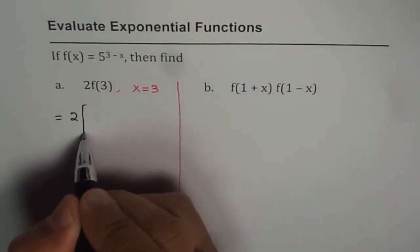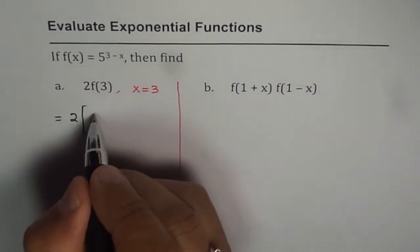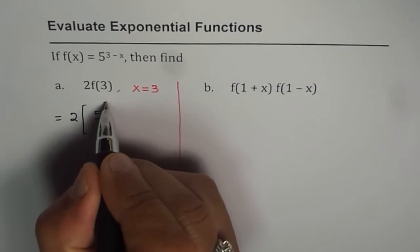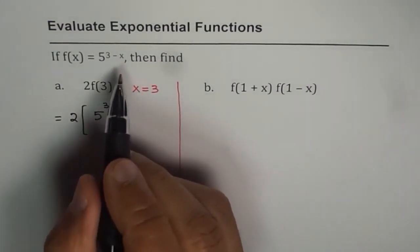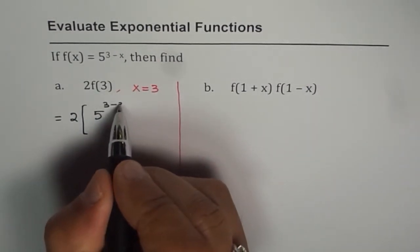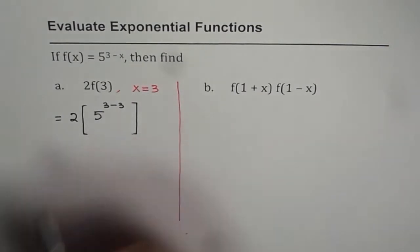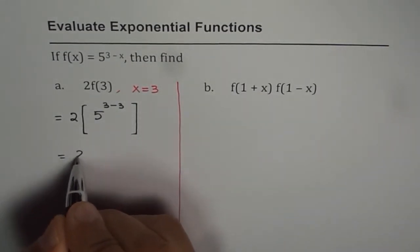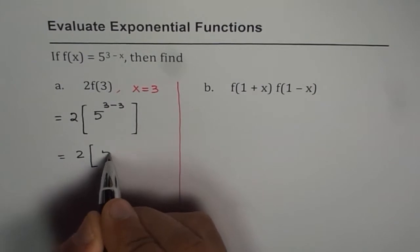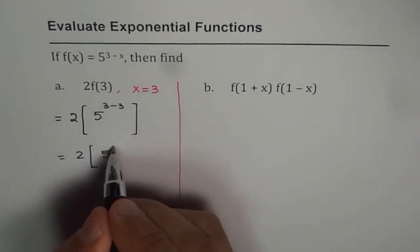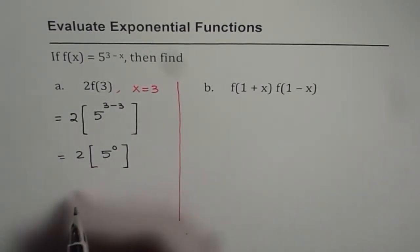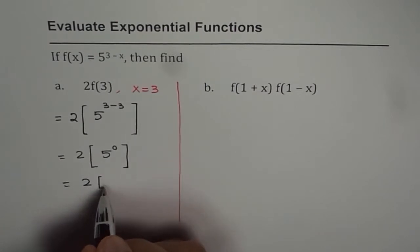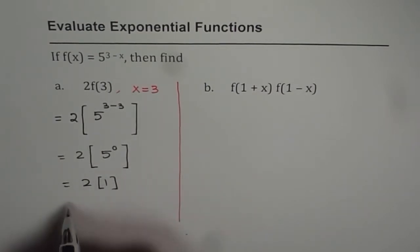So 2 times, let me put brackets here, 5 to the power of 3 minus 3 is 0. And anything to the power of 0 is just 1, right? It is just 1. So we get times 1 and therefore, we get a solution as 2.